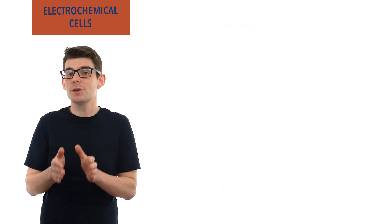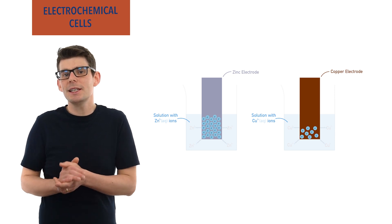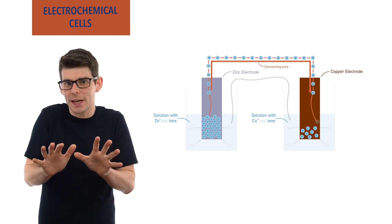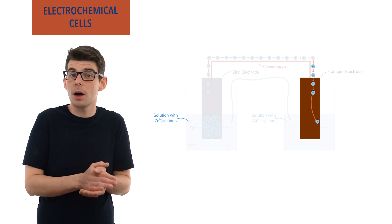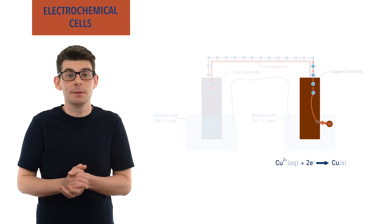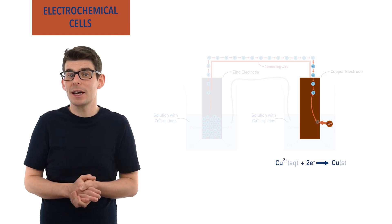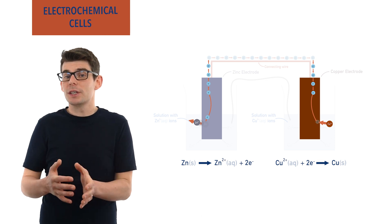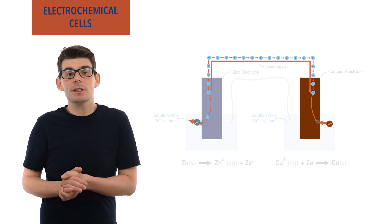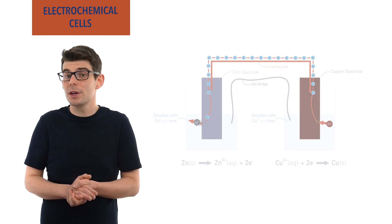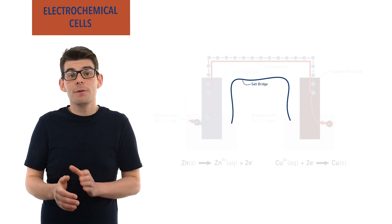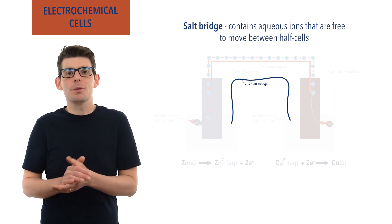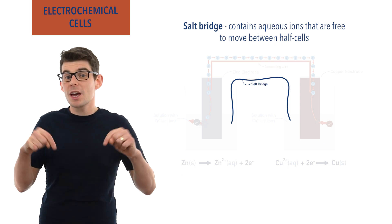For example, going back to the zinc and copper half cells from earlier, if we were to connect them together, electrons would flow from the zinc metal electrode to the copper metal electrode. The extra electrons pushed into the copper electrode would be used to reduce copper ions in the electrolyte of that half cell to copper atoms. And to replace the electrons lost by the zinc electrode, atoms of that electrode would be oxidized and enter the electrolyte as ions. To enable the electrons to keep flowing from one half cell to the other, the circuit must be complete, and to do this something called a salt bridge is used. A salt bridge contains aqueous ions of a salt that can move freely between half cells, enabling charge to flow.